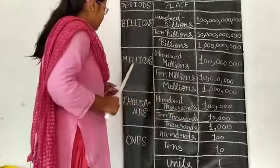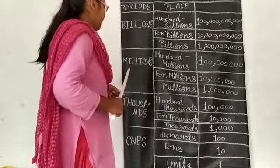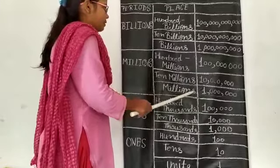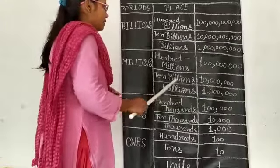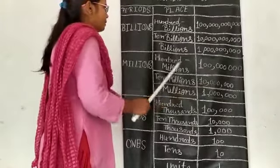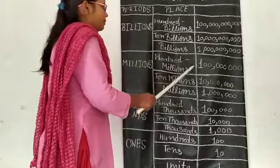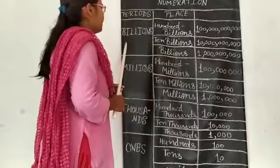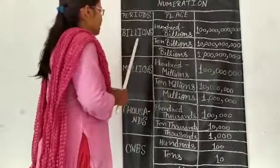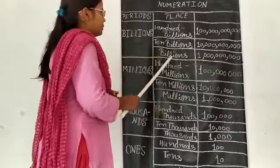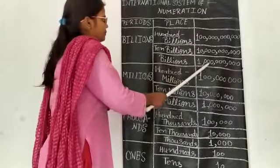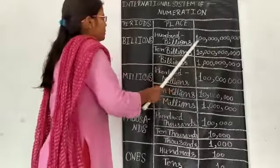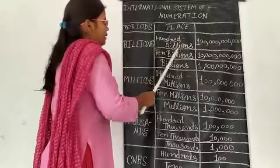Second period continued: hundred thousands. Fourth period, billions: tens billions, hundred billions.